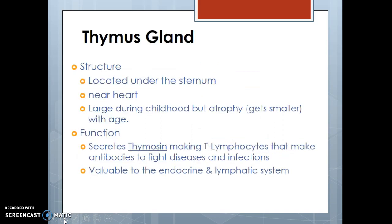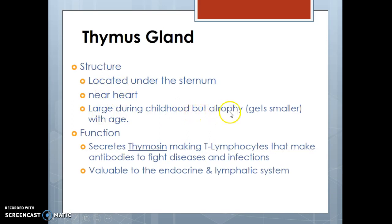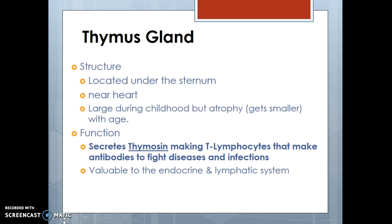The thymus gland starts out fairly large in childhood but gets smaller and smaller with age. Its important job is to secrete thymocin, which makes T lymphocytes — white blood cells that help fight off bacteria. So this gland is important to both the endocrine system and the lymphatic or immune system in order to fight off diseases or infections. It's located right under the sternum, near the heart.